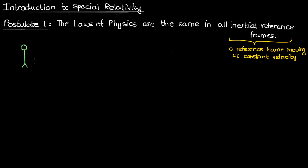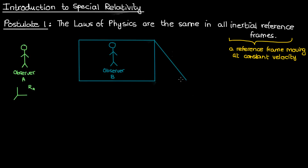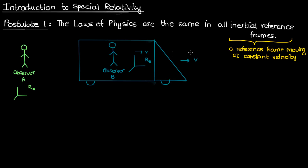To explain this first postulate, suppose there was an observer A standing stationary on the ground. Because observer A is stationary, the reference frame R_A is also stationary. Now suppose there is also an observer B traveling on a train at a constant velocity V relative to the ground. The reference frame R_B is also traveling at velocity V, because that reference frame is a coordinate system with respect to observer B.